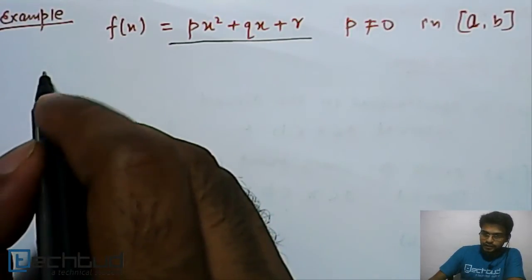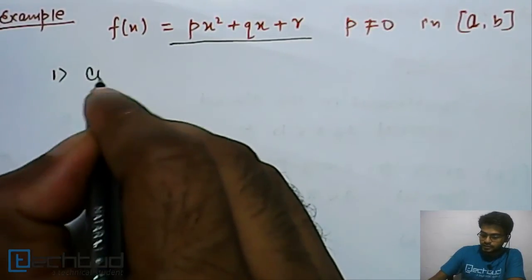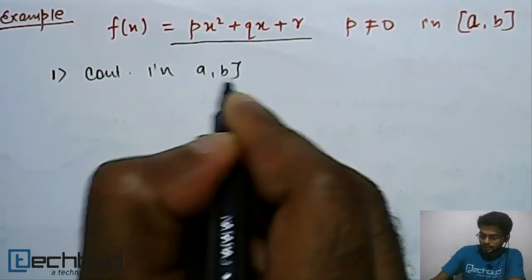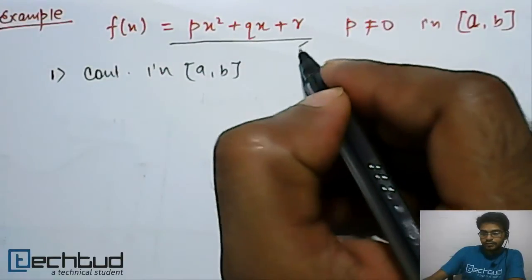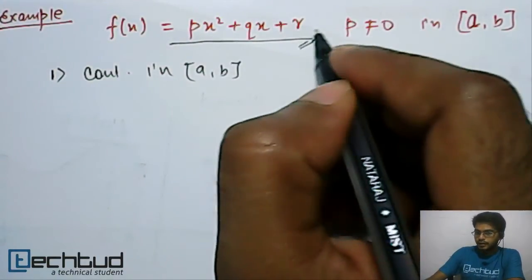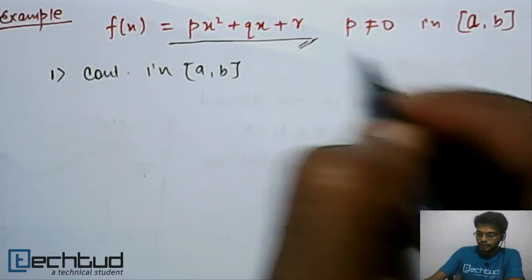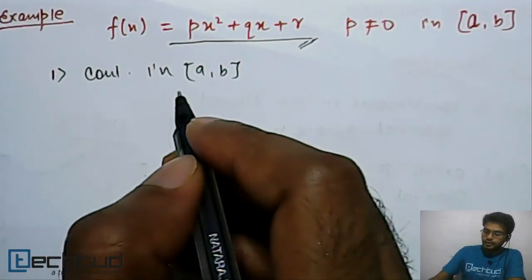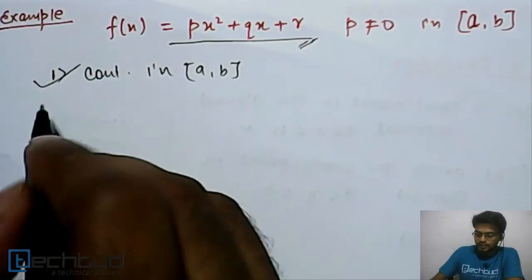The first condition of Lagrange mean value theorem is that it should be continuous in interval [a, b]. As this is a polynomial function, this is continuous and differentiable in the interval, in any interval. Because this is a polynomial function, it will be continuous. So first condition is satisfied.